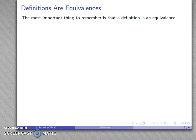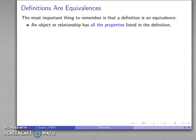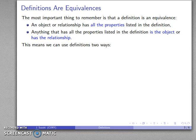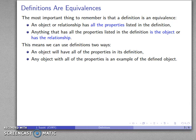The most important thing to remember about a definition is that it's an equivalence. It says that two things are completely and totally interchangeable. If I've defined an object or a relationship by saying it is this thing with all of these properties, then all of the properties listed in the definition are possessed by the object or the relationship. We can also go the other way: if I have all of the properties listed in the definition, I have to be the defined object or relationship. So we can use definitions in two ways: an object will have all properties in its definition, and any object with all those properties will be an example of the defined object.